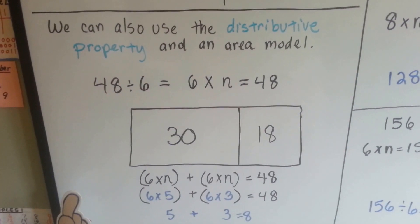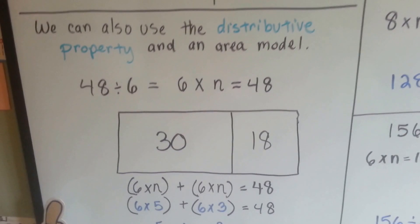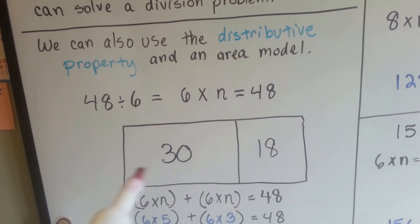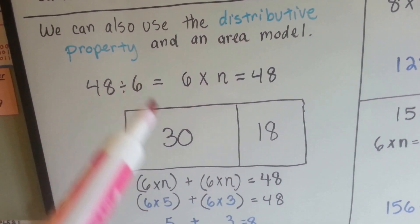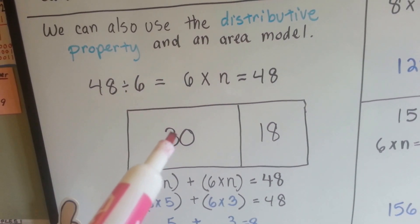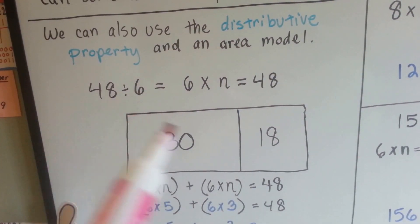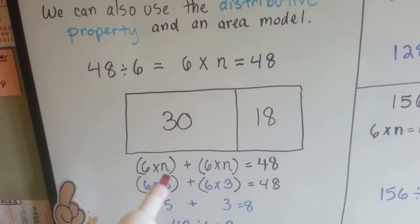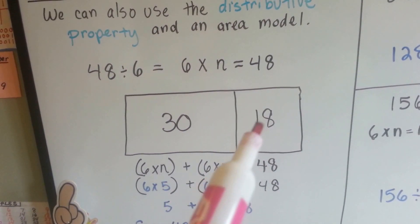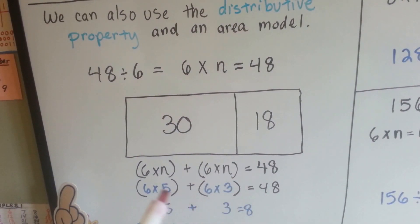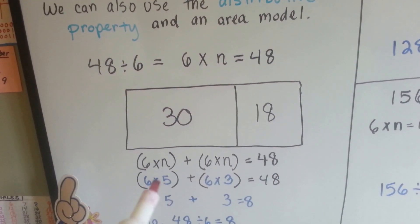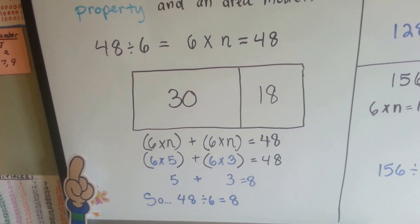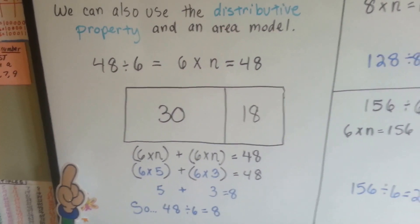We can also use the distributive property in an area model. For 48 divided by 6, we can say 6 times n is 48. We know that 6 times 5 is 30, so I'll use 5 as my first part. 30 from 48 is 18, so I have 18 left over. 6 times what is 18? 6 times 3 is 18. I know they equal 48. So I pull the addends — the 5 and the 3, which equal 8 — and I know that 48 divided by 6 is 8. I used the distributive property.